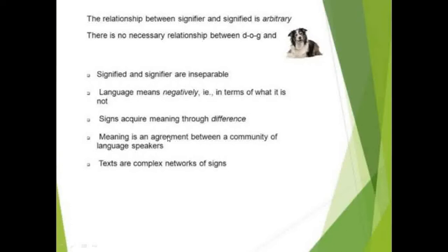Texts are complex networks of signs — every text is a complex network of signs. Each sign interacts with another sign — it's as if these are free electrons, all at a random or energized level, and each sign seems to have a life of its own interacting with other signs.